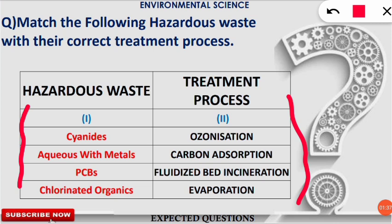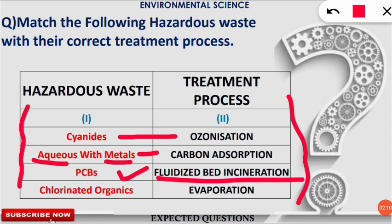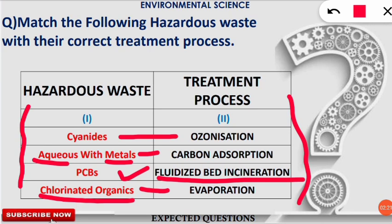Cyanide hazardous waste is treated with the help of the ozonization technique, also known as ozonation. Next, hazardous waste found in aqueous liquid form with metals is treated using fluidized bed incineration. Chlorinated organics — organics containing chlorine compounds — are treated with the simple step of evaporation. Although evaporation is not highly effective, it is used to treat chlorinated organics in the first stage.